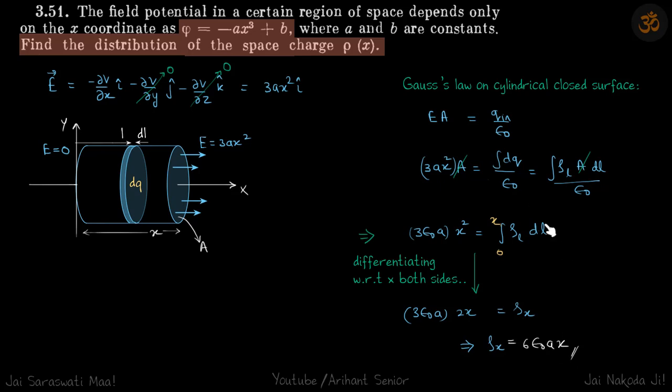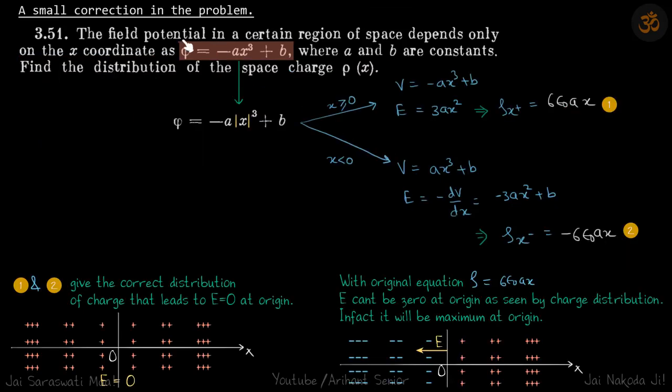But we are not done yet. Now if you are stuck in the problem and you have come here, maybe you got a problem, and that problem is resolved here as a small correction. So here the potential is given as minus ax³ plus b.